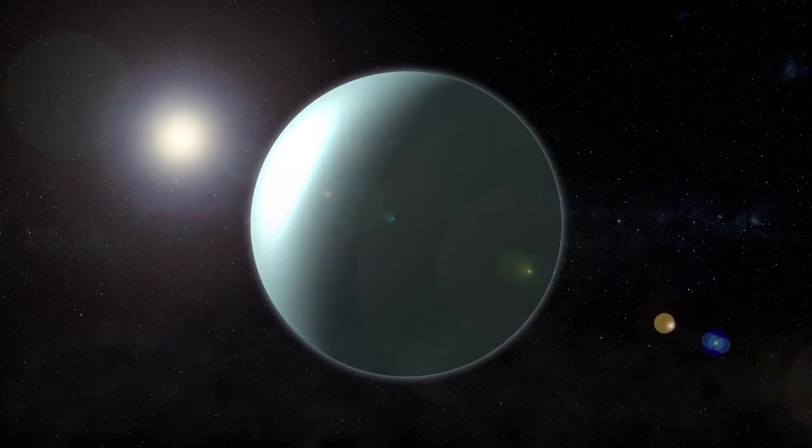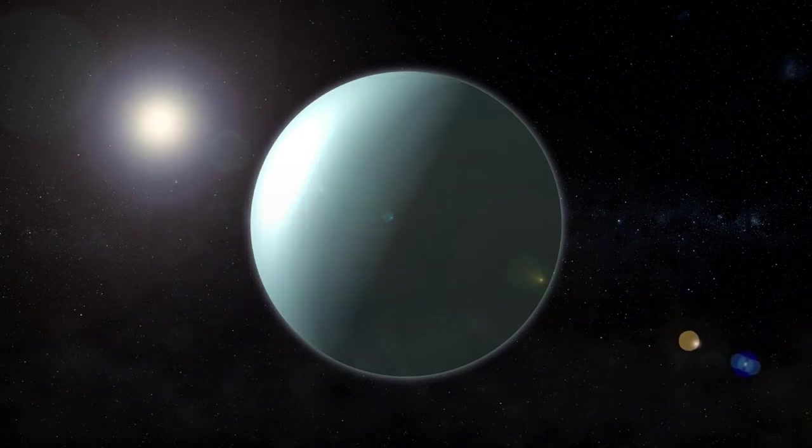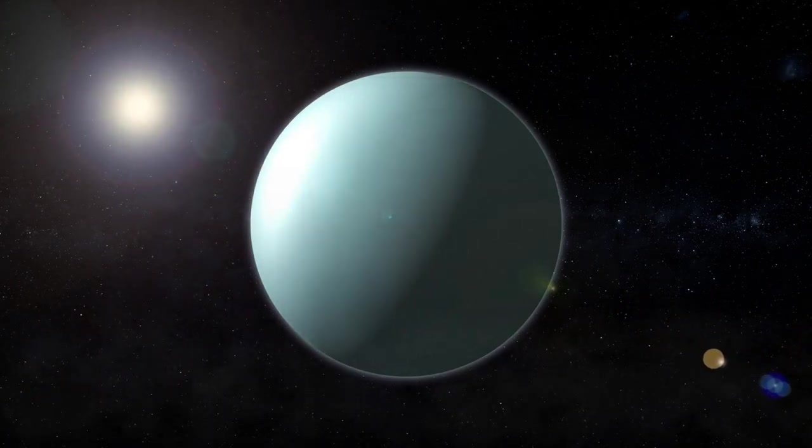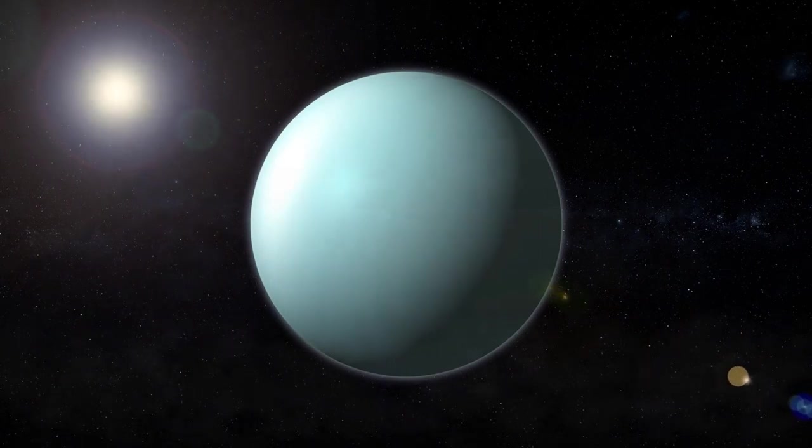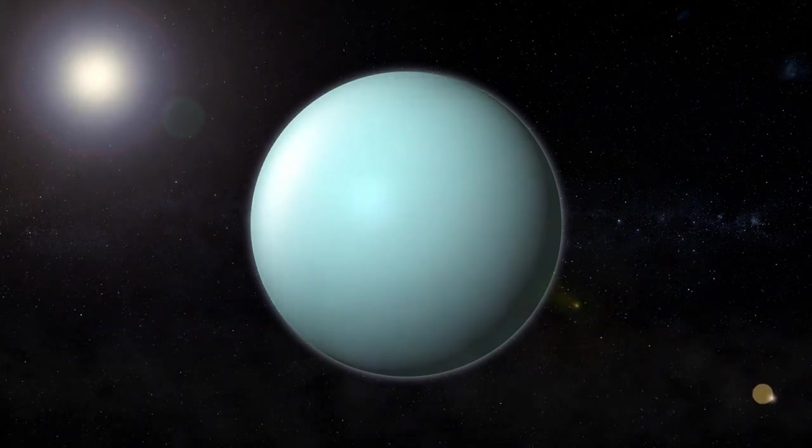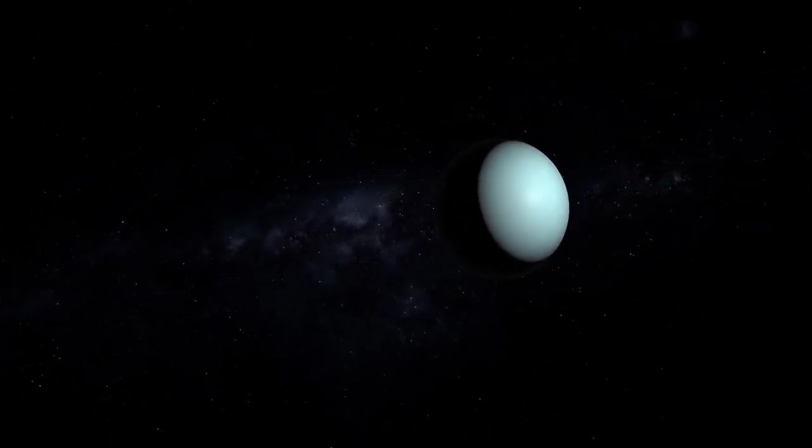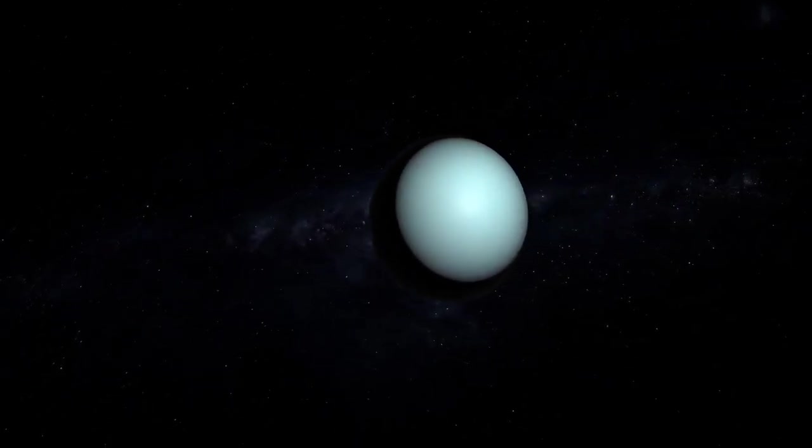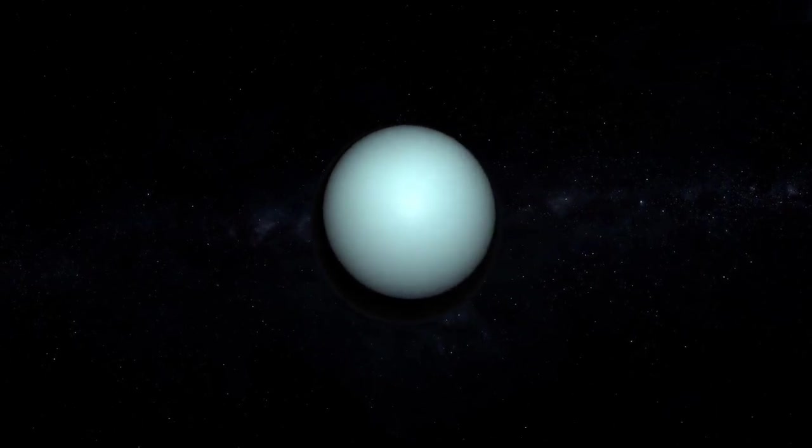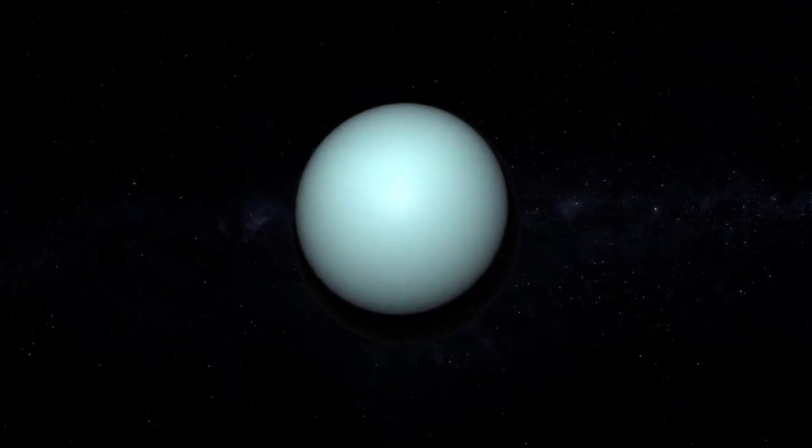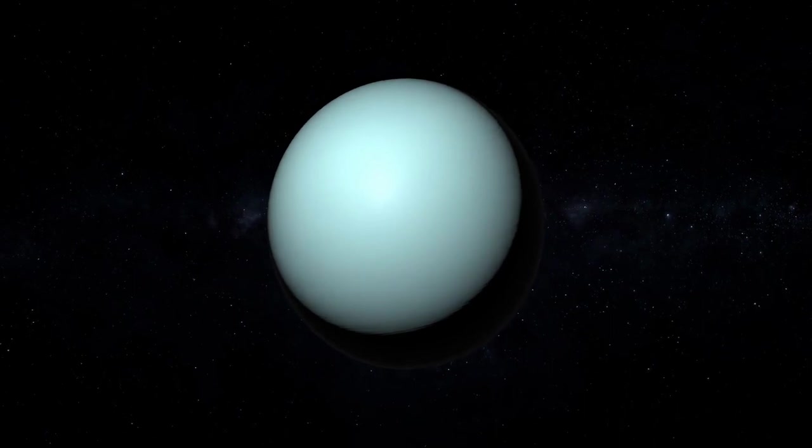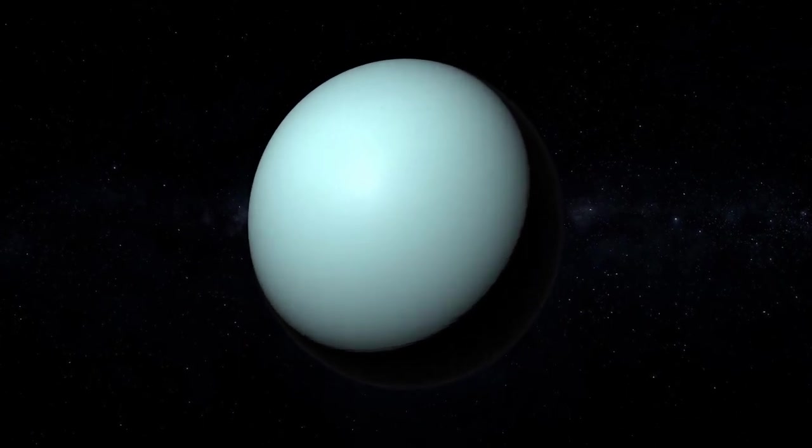Uranus is the only planet whose equator is nearly at a right angle to its orbit, with a tilt of nearly 98 degrees. This is possibly the result of a collision with an Earth-sized object long ago. This unique tilt causes the most extreme seasons in the solar system. For nearly a quarter of each Uranian year, the sun shines directly over each pole, plunging the other half of the planet into a 21-year-long, dark winter.